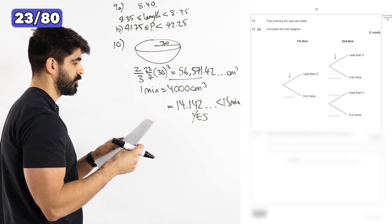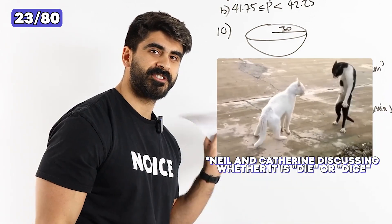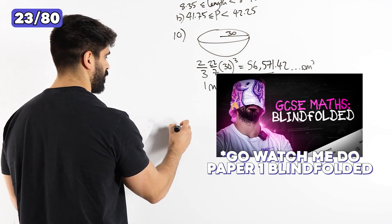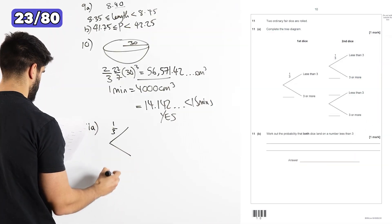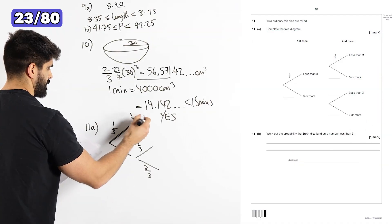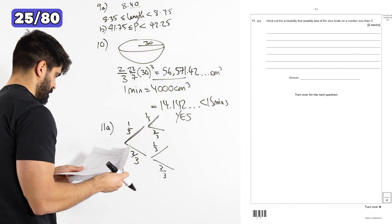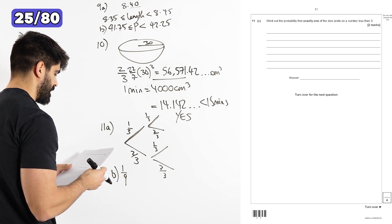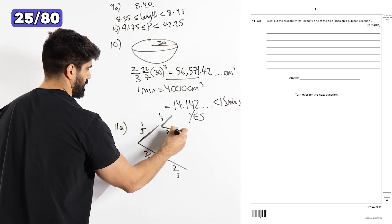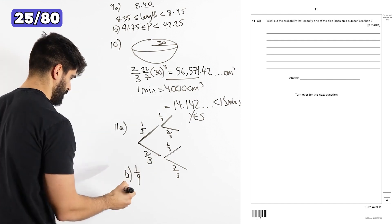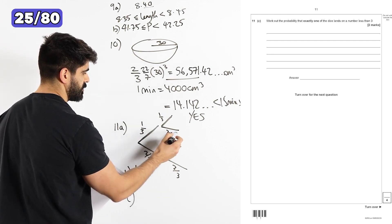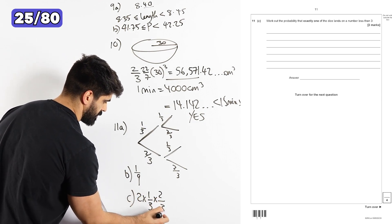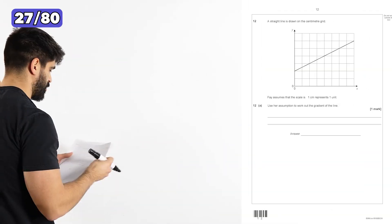Question 11, two ordinary fair dice. There you go, AQA, actually using correct terminology. If you watched my previous video, you'll know about the controversy there. So one third, three or more would then be two thirds less than three. That is one ninth. Part C, work out the probability that exactly one of the dice lands on a number less than three. There's only two marks. So that's going to be a third times two thirds doubled, because both of these probabilities are the same. So it's two lots of one third times two thirds, which is four ninths.